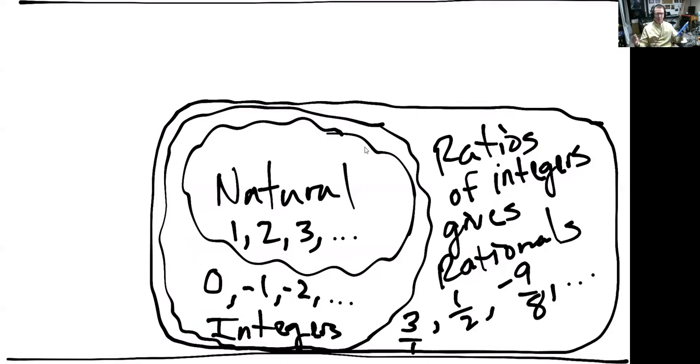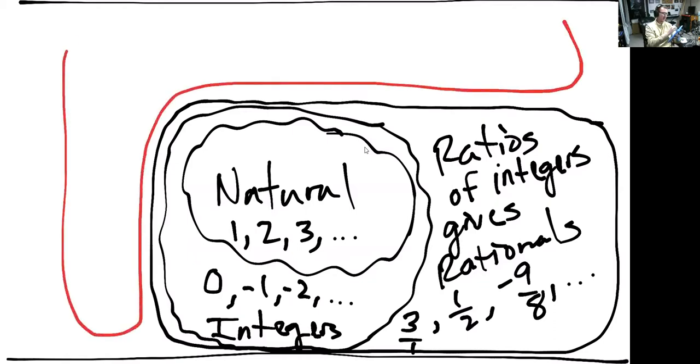Now, sort of separate from these rational numbers are this extra category that gets a bit strange. I'm going to draw this red bubble outside here. You might be asking yourself: are there numbers that cannot be written as ratios? The integers are ratios, the natural numbers are ratios. Are there numbers we cannot write as a ratio? And the answer is obviously yes. These are not rationals. We call them irrationals.